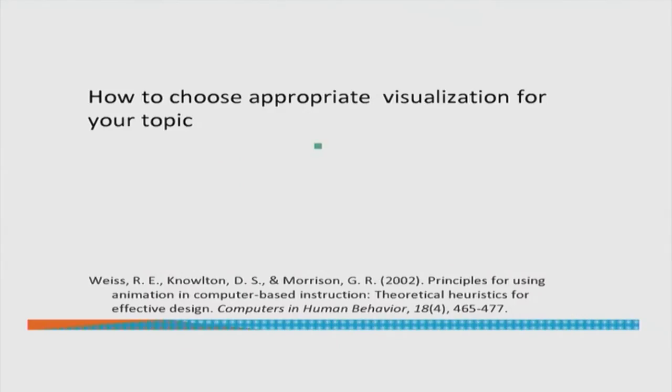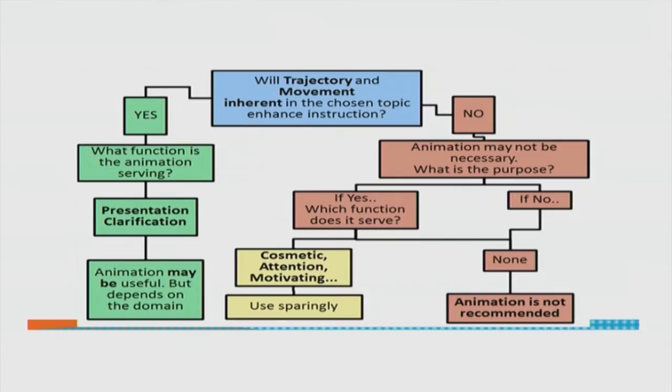There is a simple tool we can use to choose the appropriate visualization for your topic — the Weiss graph (spelled W-E-I-S-S, but you can remember it as W-I-I-S-E). Given any topic with a learning objective, for example packet transfer with the objective that students can draw a diagram of how packet transfer happens between a sender and a receiver, the Weiss graph will help you to choose wisely about which visualization to use.